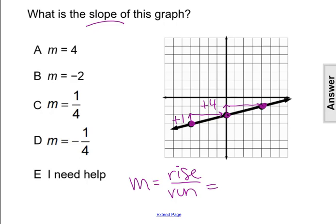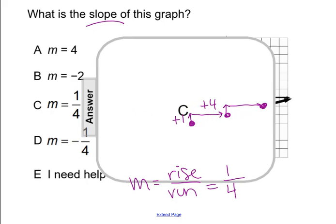The rise is a positive 1 for moving up 1 and a positive 4 for moving right 4. So my slope m equals 1 fourth, making our answer choice C.